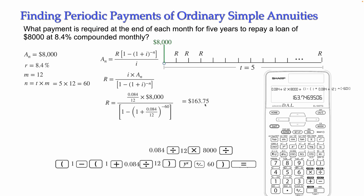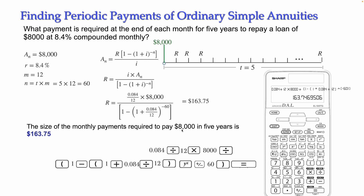The calculator gives the answer $163.75. So the size of the monthly payment required to repay the $8,000 loan in five years at 8.4% compounded monthly is $163.75. That finishes the explanation of how to compute the periodic payment of an ordinary simple annuity. Remember: identify whether you know the present value or the future value to choose the correct formula, then solve for R, substitute, and use your calculator. Thank you very much for being here — I hope you found this useful.